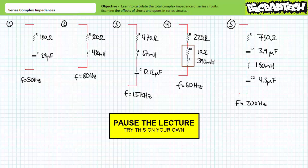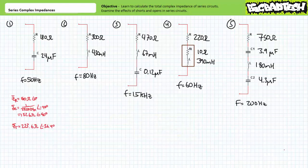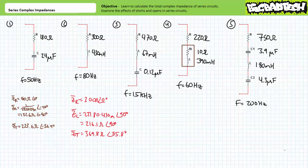Express all final answers using proper engineering format and use polar complex numbers with a magnitude and direction. For our first example problem, we're given a series relationship of a 180 ohm resistor and a 24 microfarad capacitor at a frequency of 50 hertz. The resistor has a complex impedance of 180 ohms at an angle of zero. The capacitor has a complex impedance of 132.6 ohms at an angle of negative 90 degrees. Summing these values, we arrive at a total series complex impedance of 223.6 ohms at an angle of negative 36.4 degrees. For the second example problem, we're given a 300 ohm resistor and a 430 millihenry inductor at 80 hertz, giving a total complex impedance of 369.8 ohms at an angle of positive 35.8 degrees.